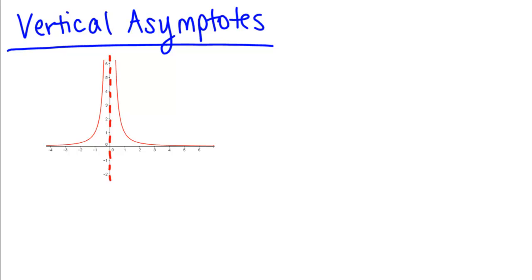So in this example, this is the graph 1 over X squared that we were looking at earlier. On both sides of this vertical asymptote, it goes up to infinity and it cannot cross.